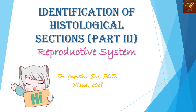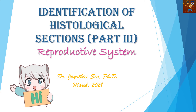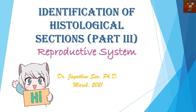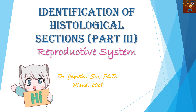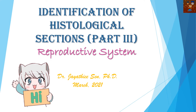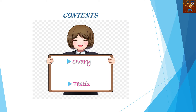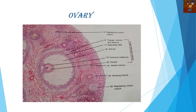Hello everyone, today I am going to discuss about the histological sections of the reproductive system. This is the third part of this identification of histological sections series. Regarding the contents, I am going to discuss about two very popular histological sections: the histological section of the ovary, which comes under the female reproductive system, and the histological section of the testes, which comes under the male reproductive system.